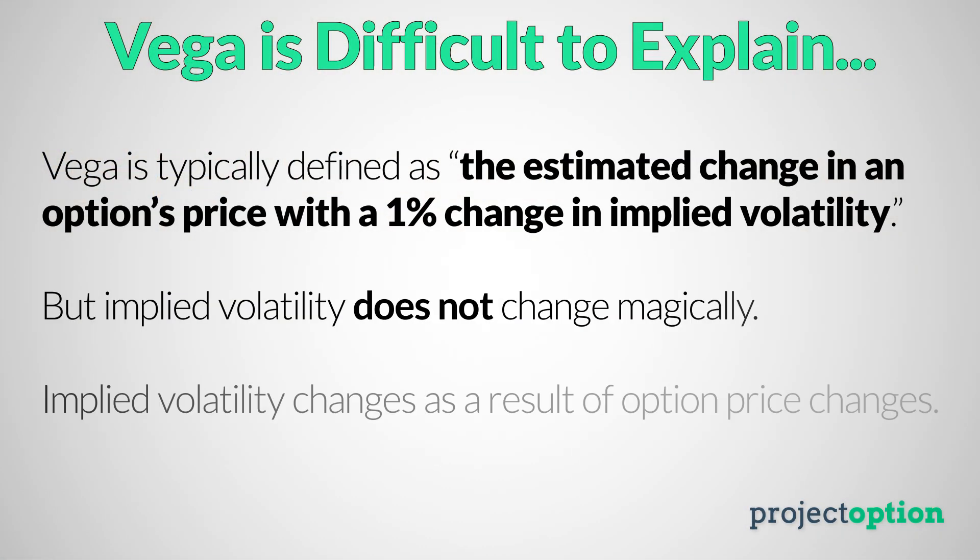As the demand for a stock's options change, the option prices themselves will actually change in value, and with these changes in value over time, the implied volatility — or the expected amount of stock price fluctuation from the market — will actually change over time. We can determine that based on changes in the stock's option prices. Vega as an option Greek is a little bit tricky to explain because implied volatility does not change on its own. Implied volatility actually changes when the option prices change.